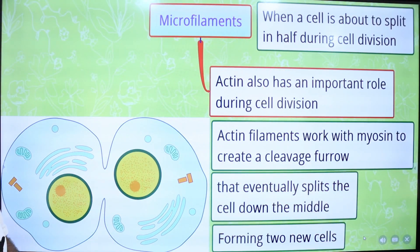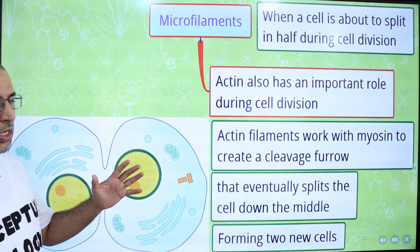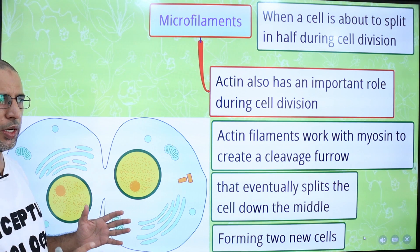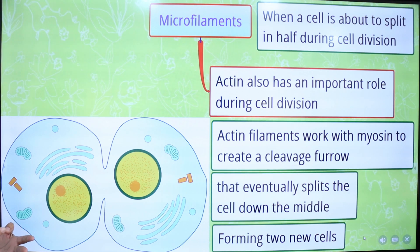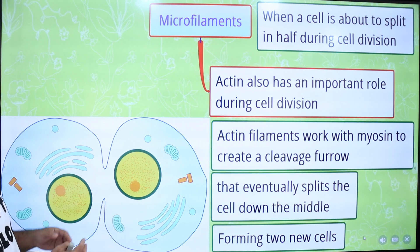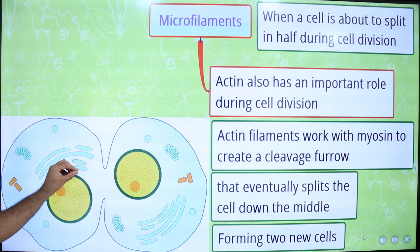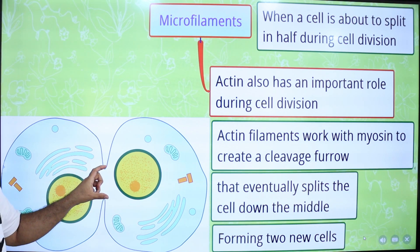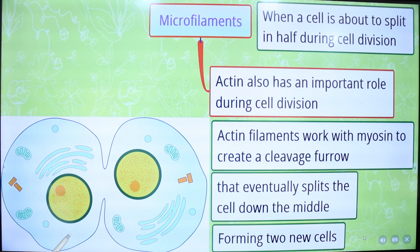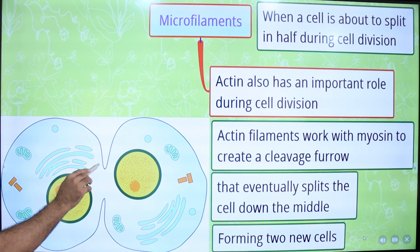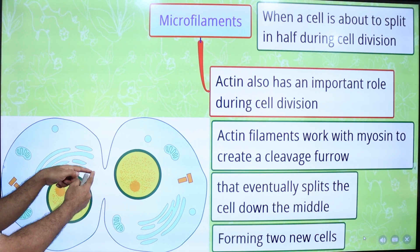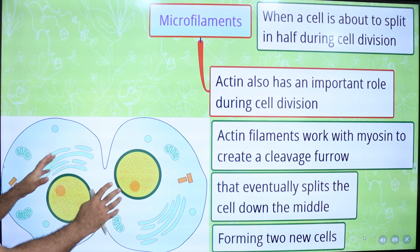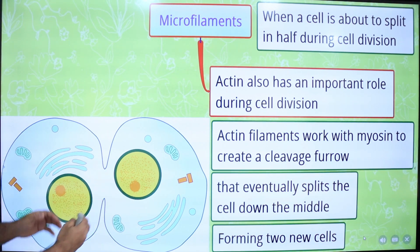Actin has an important role during cell division. Cell division consists of mitosis, known as karyokinesis, and cytokinesis. Karyokinesis includes prophase, metaphase, anaphase, and telophase, resulting in the division of the nucleus. The division of cytoplasm is known as cytokinesis. During cytokinesis, when a cell is about to split in half, actin filaments work with myosin filaments to create a cleavage furrow. This cleavage furrow deepens and eventually splits the cytoplasm into two daughter cytoplasms, so that one parent cell is divided into two daughter cells.